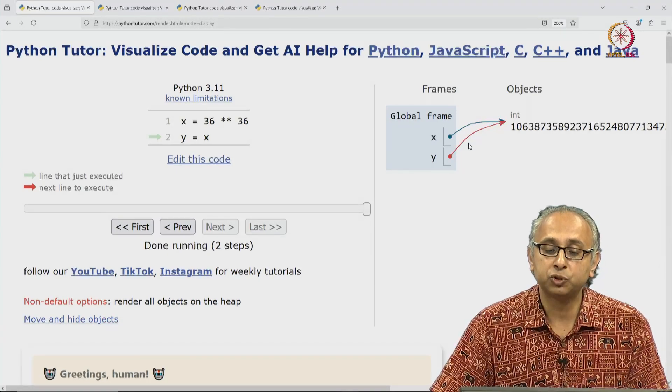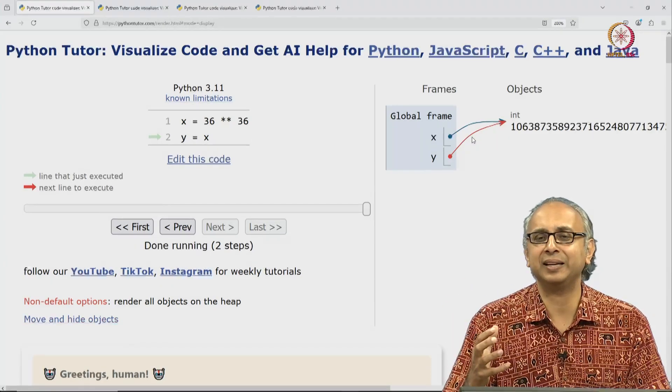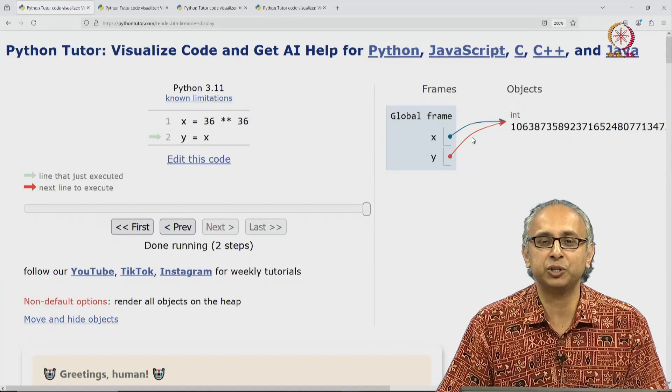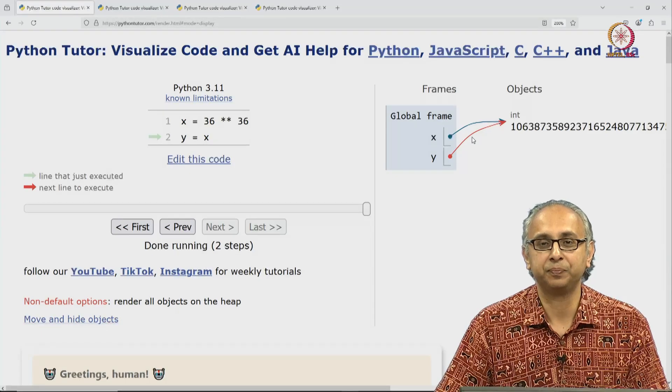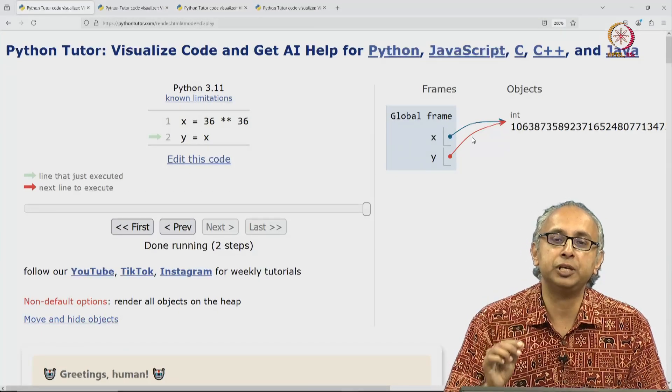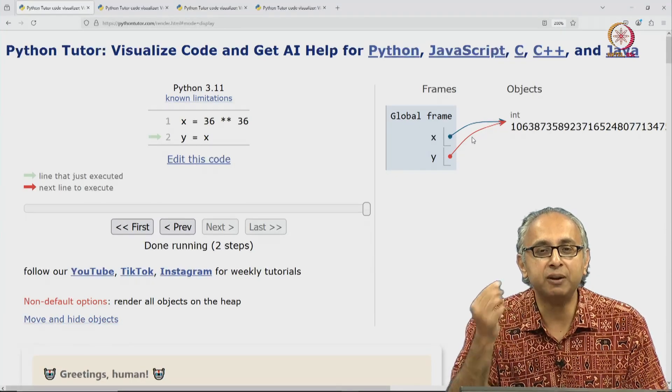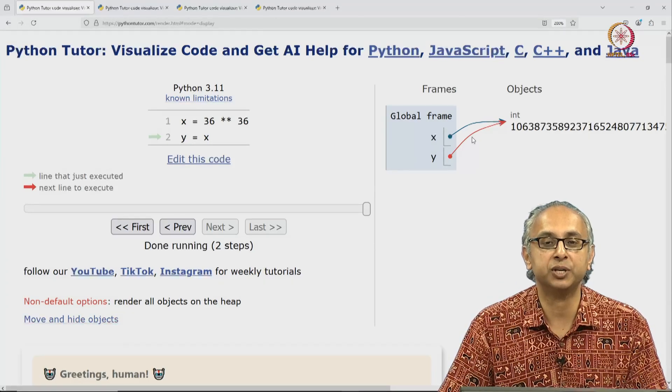As you can see, with so many arrows, this kind of visualization might get cluttered after a while. And this is why the default python tutor visualization shows it without these arrows. But as a beginner, I would like you to use the non-default visualization so that it is very clear which variables are labeling which objects.